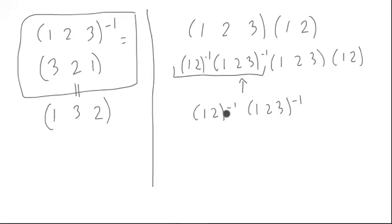Now notice, using this trick over here, I could think of the inverse of this as (1, 3, 2). I could think of the inverse of this, well, just switch the order, (2, 1). But (2, 1) and (1, 2), it's its own inverse. If you switch 1 and 2 and then switch them again, you've done nothing.